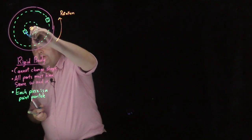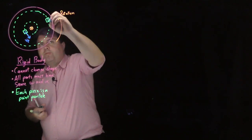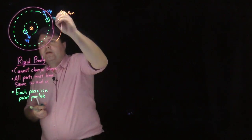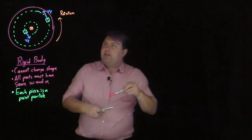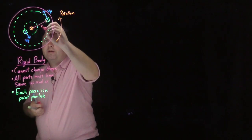So this point particle is going to have some velocity of this piece. This point particle is going to have some velocity of this piece. And each of our objects is going to have some distance from the center.